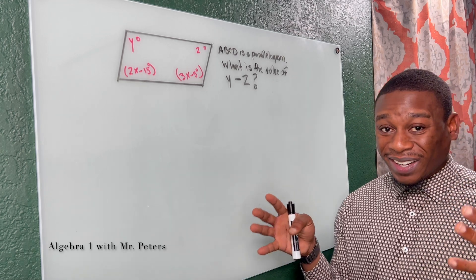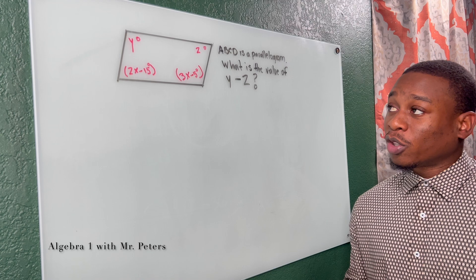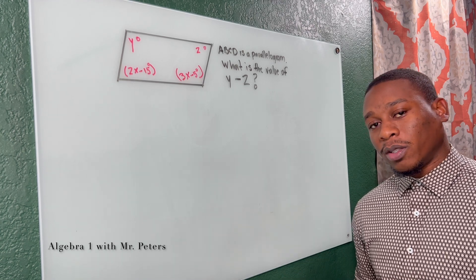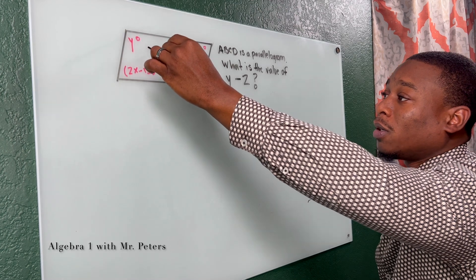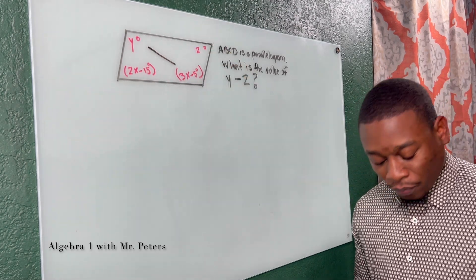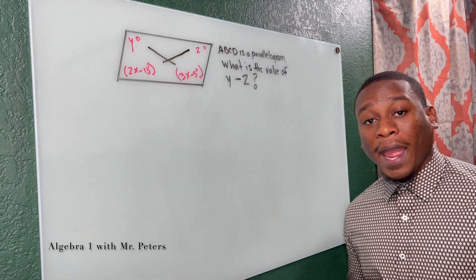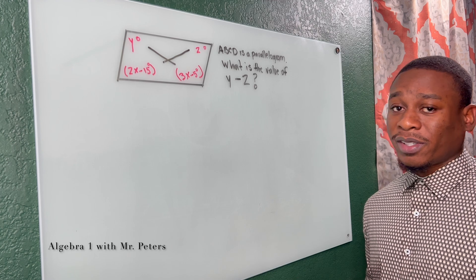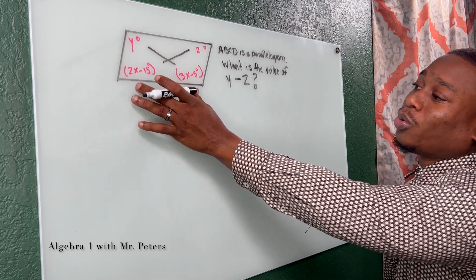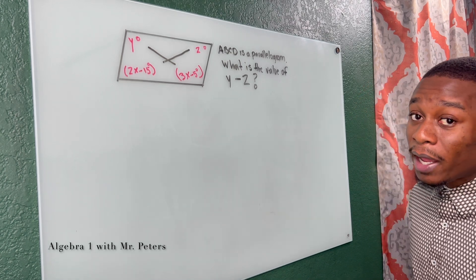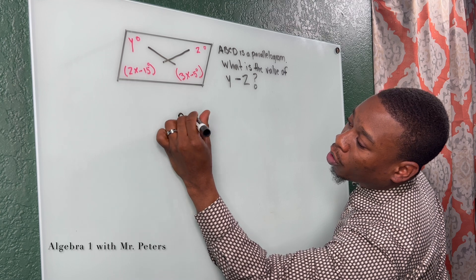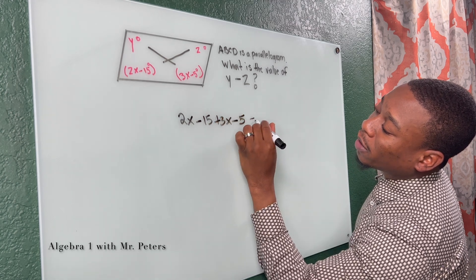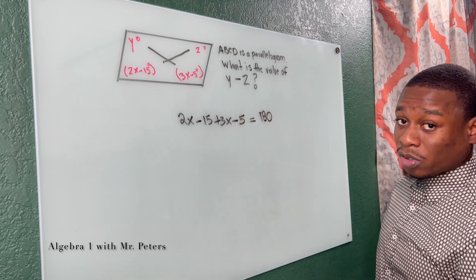Problem number three — now we're dealing with parallelograms. They're asking us what is the value of Y minus Z. The first thing to understand is that opposite angles are congruent, so Y and 3X minus 5 are equal, and 2X minus 15 and Z are equal. Consecutive angles add up to 180. If we use these two angles and create an equation, we can figure out what Y and Z are.